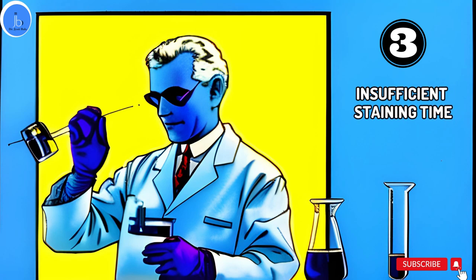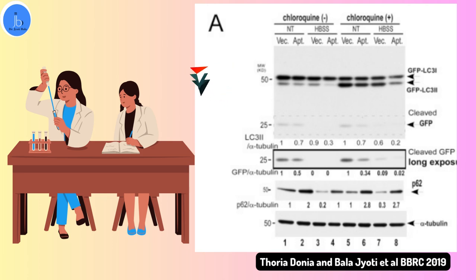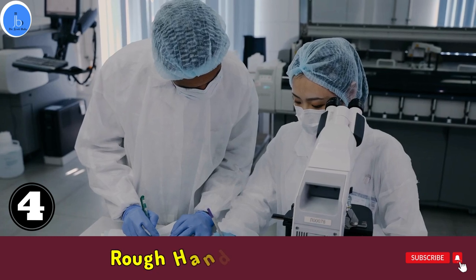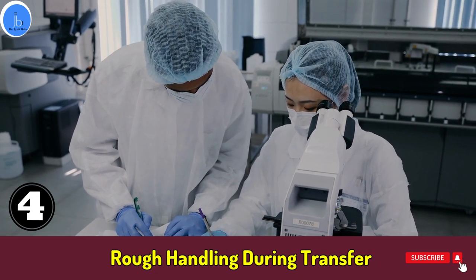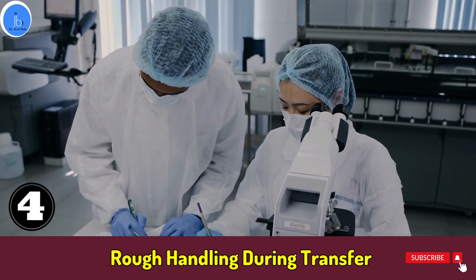Mistake number three is insufficient staining time. Giving the gel insufficient staining time can result in faint or unclear protein bands. Follow the recommended staining time to ensure proper visualization of your protein sample.